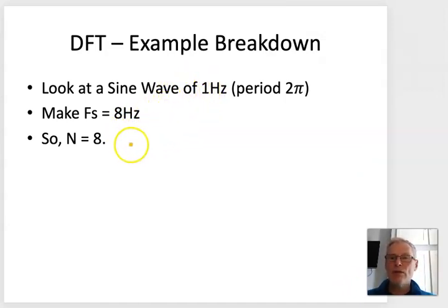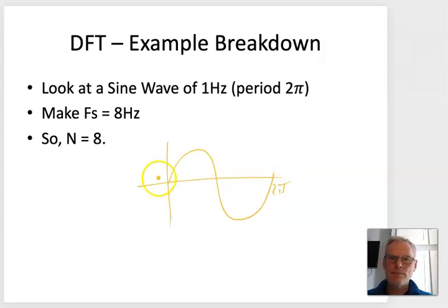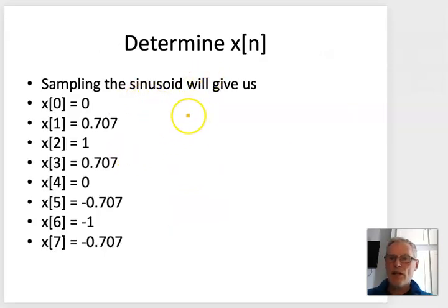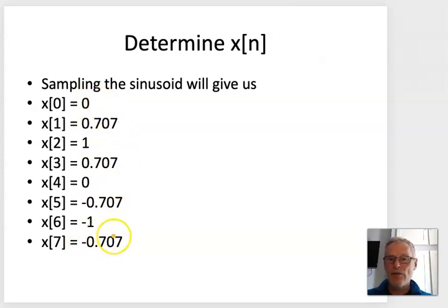Let's look at an example. We start with a 1 Hz sine wave with a period of 2π. The sample frequency is 8 Hz, so N = 8. If we sample the sinusoid we end up with discrete sample values starting at zero and ending around −0.707. Since this is a periodic function, it wraps around back to zero.